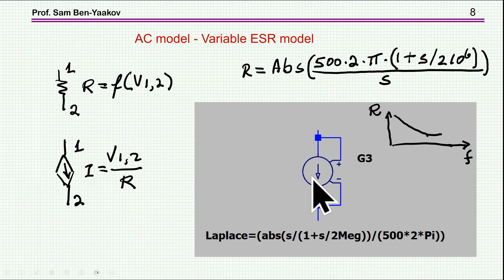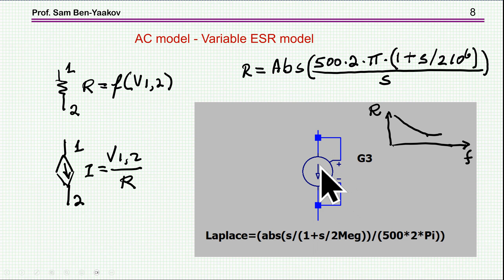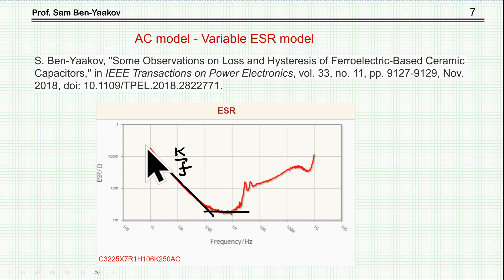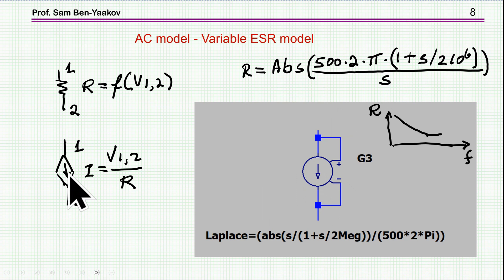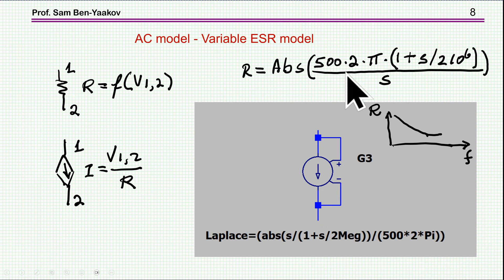I'm describing the ESR as a function of frequency using these lines, done by a behavioral current source — a G source — where the current is a function of the voltage between the two ports. The expression is a Laplace transfer function with a pole and a zero. This whole idea is based on the fact that we can describe a resistor as a current-dependent source equal to the voltage across it divided by the resistance. The Laplace equation is recognized by LTSpice, giving us the ESR behavior across frequency.